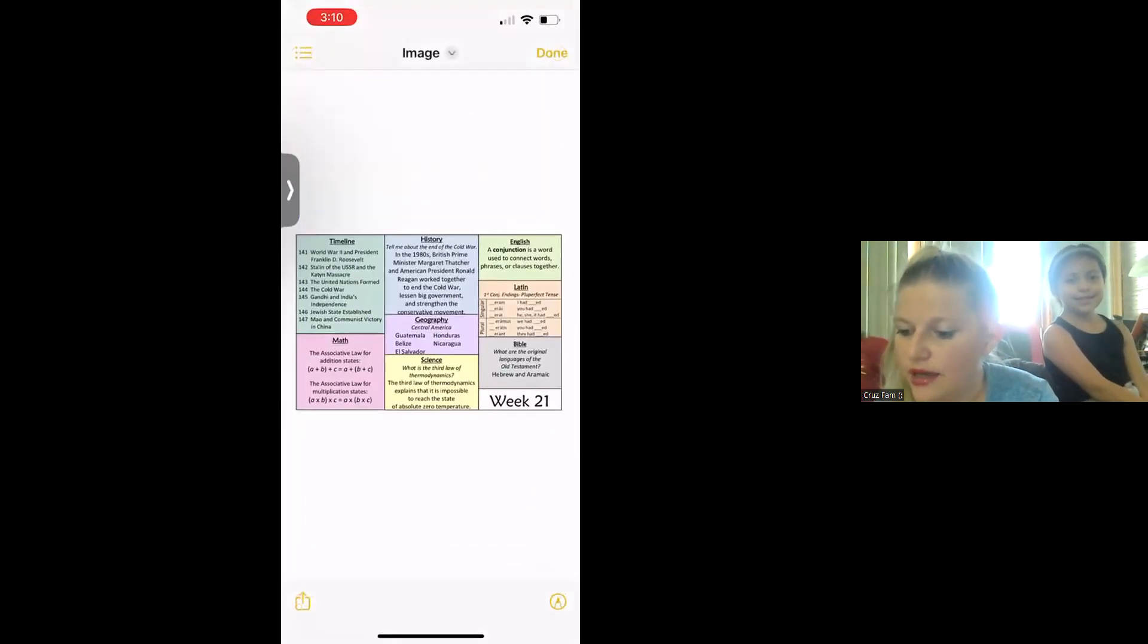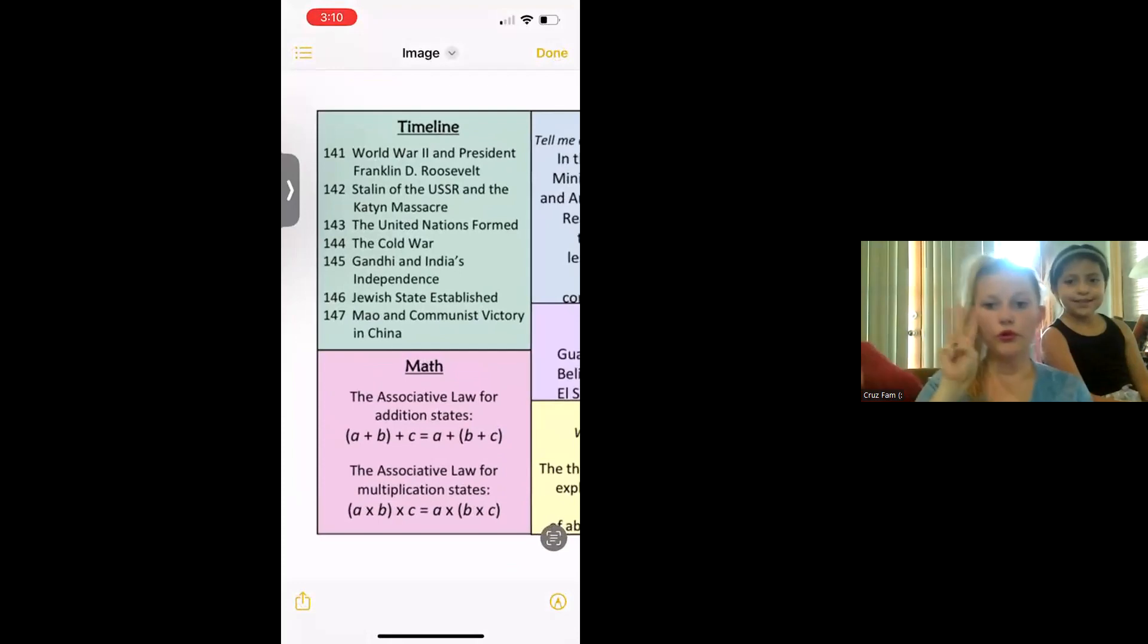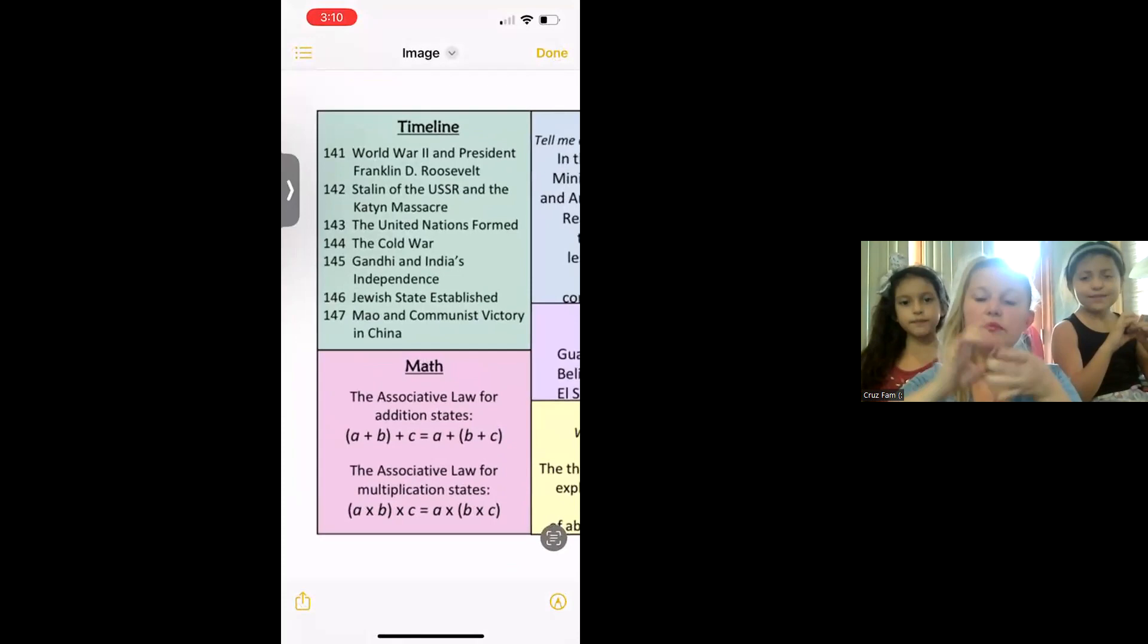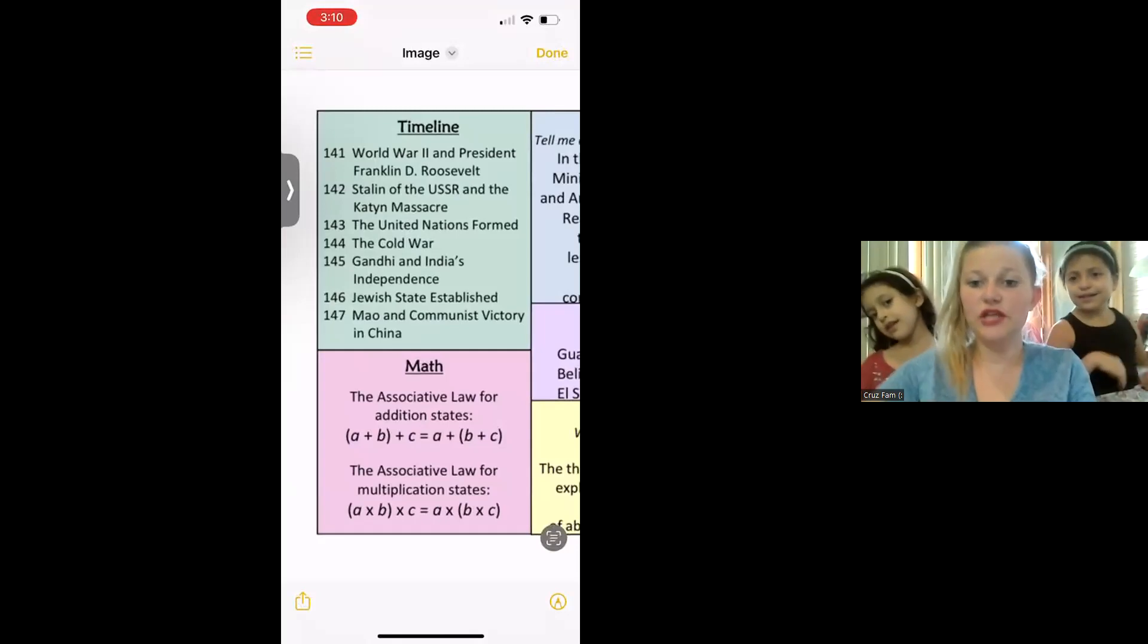Timeline. Timeline: World War II and President Franklin D. Roosevelt, Stalin and the USSR and the Katyn Massacre, the United Nations formed, the Cold War, Gandhi and India's independence, Jewish state established, Mao and Communist victory in China.